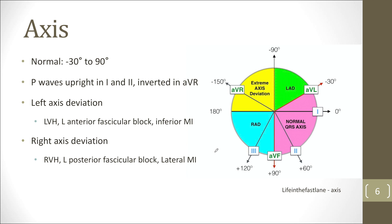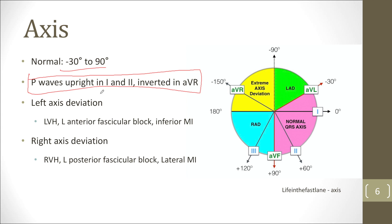The next thing I want to talk about is axis. I personally thought axis was either the most difficult thing to understand or remember when I was first starting out, but I want to make it as simple as possible so you only have to remember one rule. You're either going to have a normal axis or an abnormal axis. The normal range — shown in pink — is between negative 30 and 90 degrees. But you don't even have to remember those numbers.